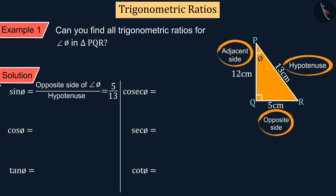Similarly, we know that cos phi is equal to the ratio of the adjacent side to the hypotenuse, from which we get 12 upon 13.